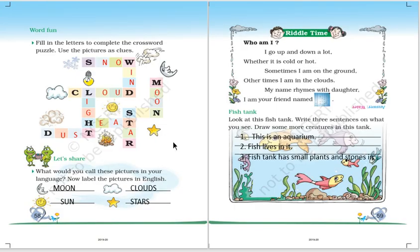Next is the word fun. Here you have got a crossword puzzle. You have to find out the names of these pictures: snow, wind, moon, stars, heat, dust, clouds, sun.